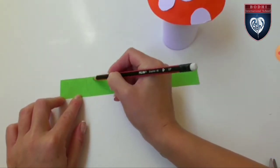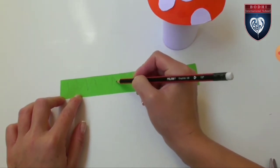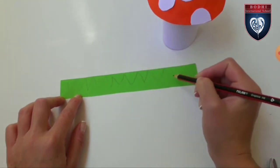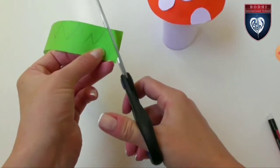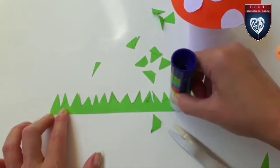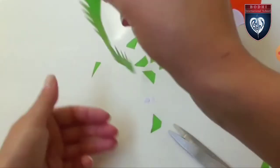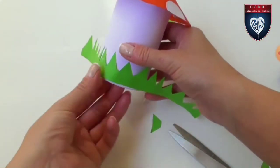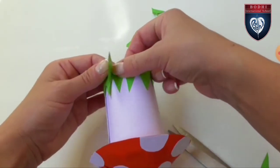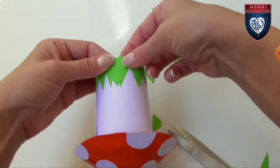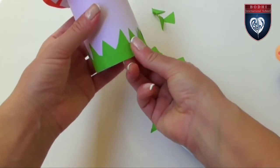Stick the cone which we have already made over it and take a strip of green paper. Draw irregular triangles over it to look like grass and stick it at the edge of the cylinder.